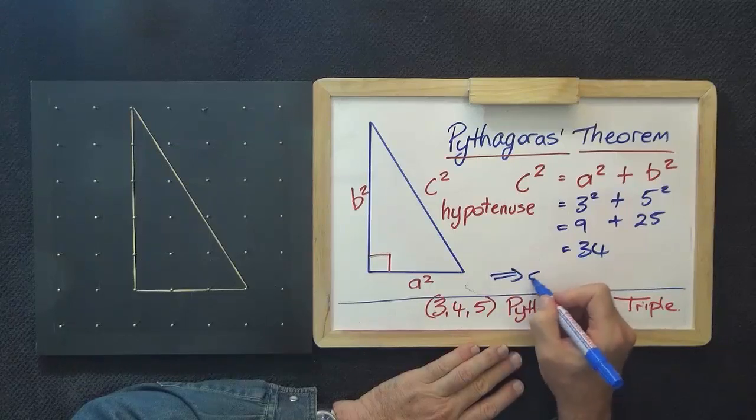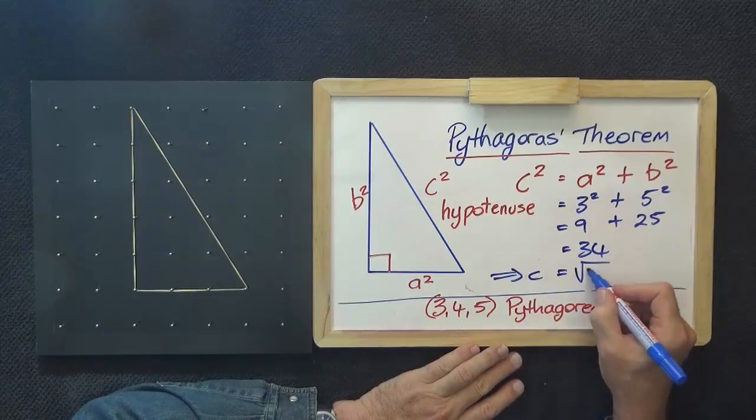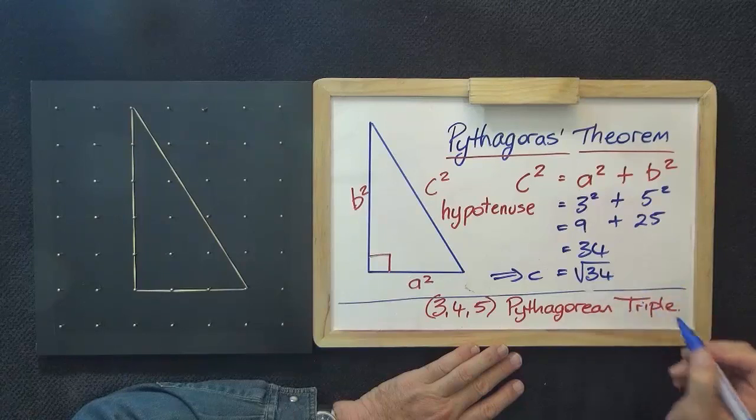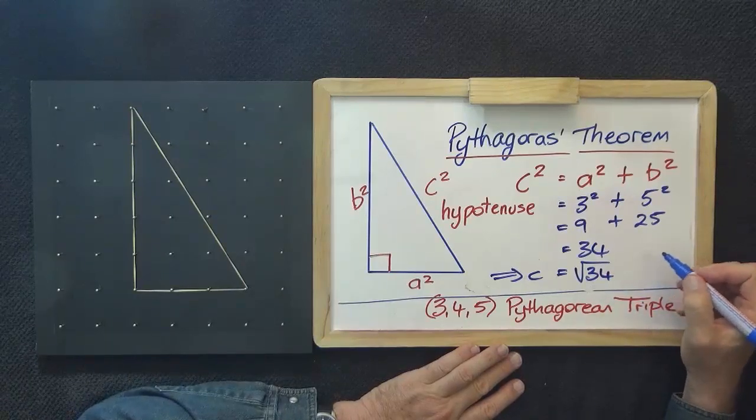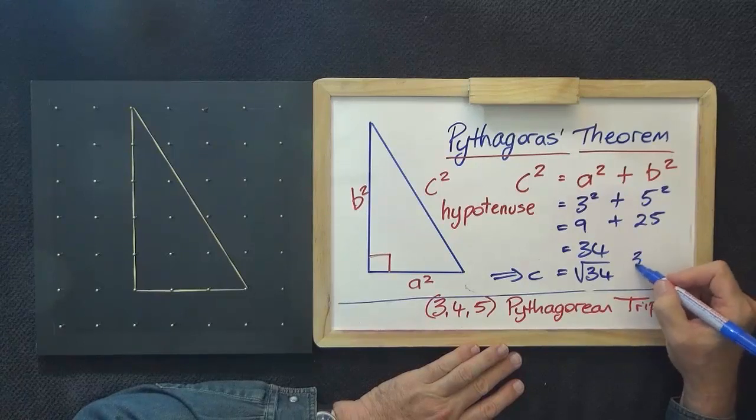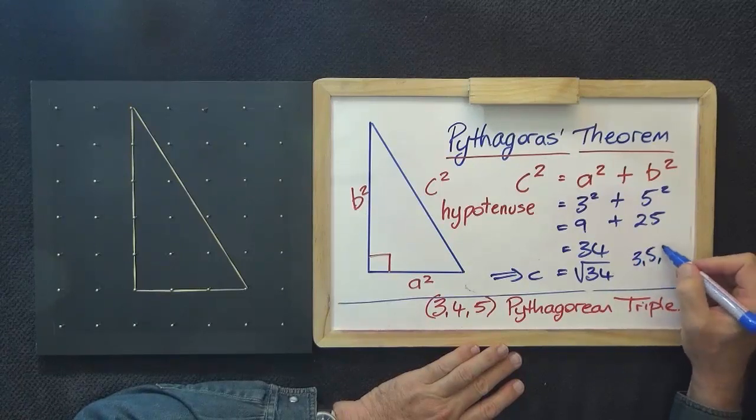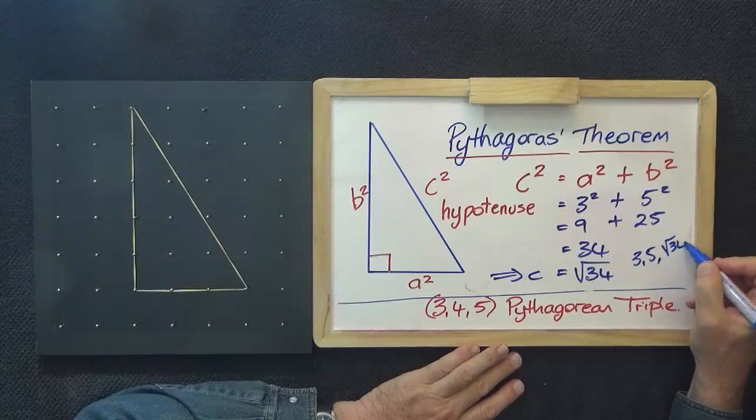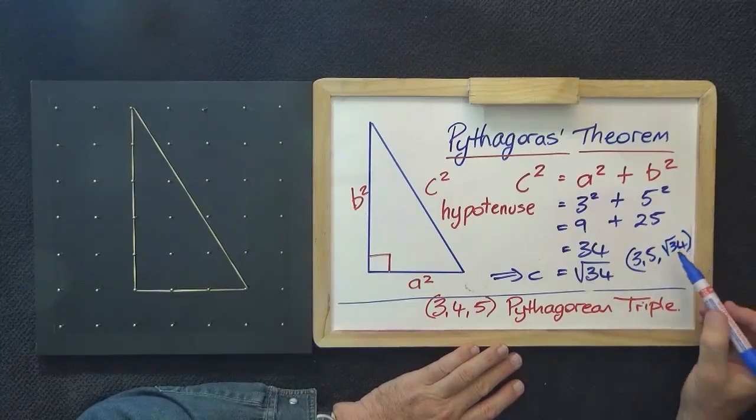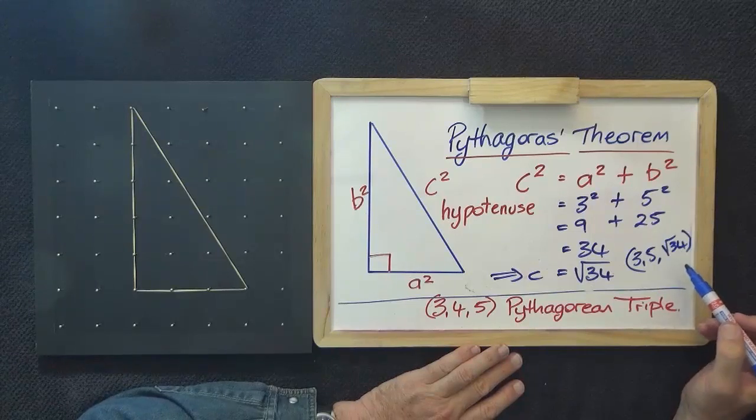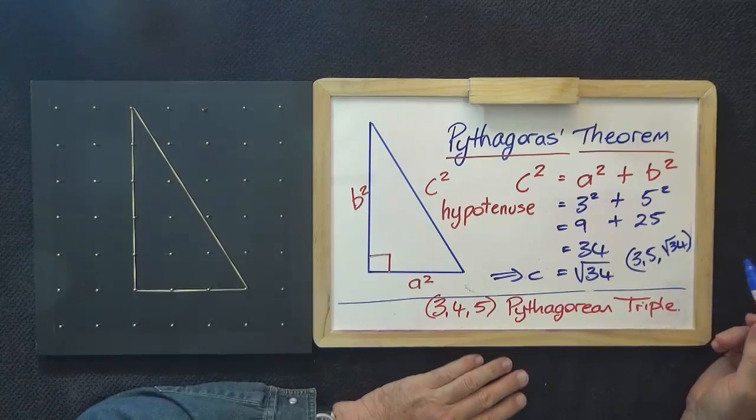So C will equal the square root of 34. Note that 3, 5, square root of 34 is not a Pythagorean triple because the square root of 34 is not a whole number.